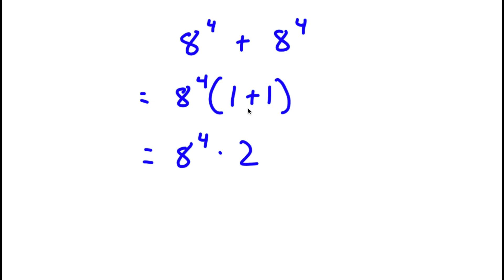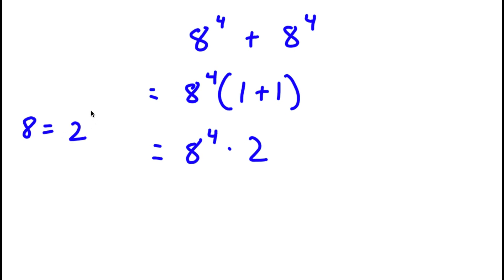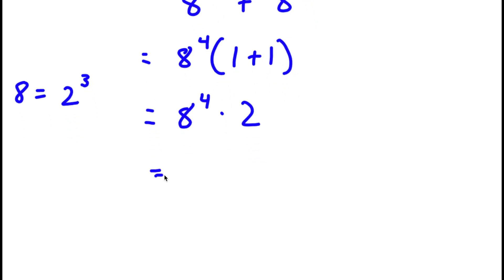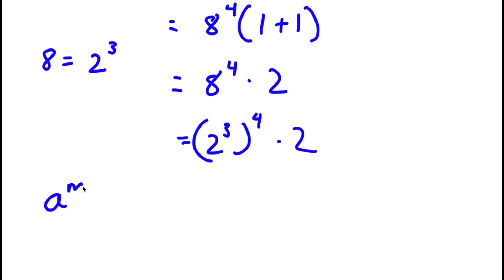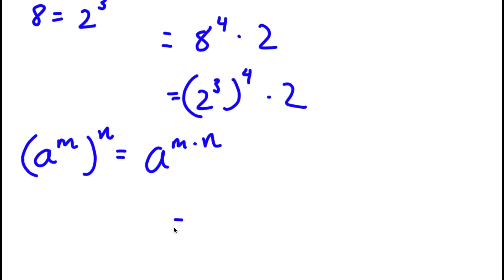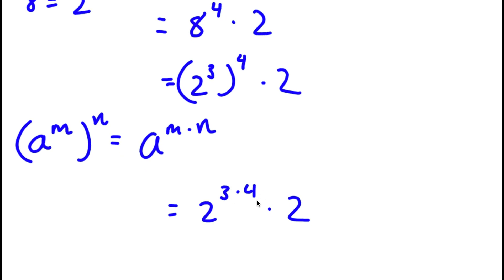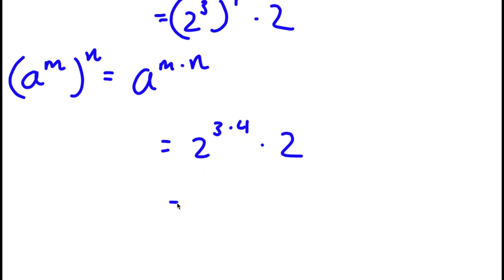Now, 8 is the same thing as 2 to the power of 3. So if I replace 8 with 2 to the power of 3, I get 2 to the power of 3 to the power of 4 times 2. If I have something in the form a to the power of m to the power of n, this is equal to a to the power of m times n. So 2 to the power of 3 to the power of 4 equals 2 to the power of 12. So I have 2 to the power of 12 times 2.